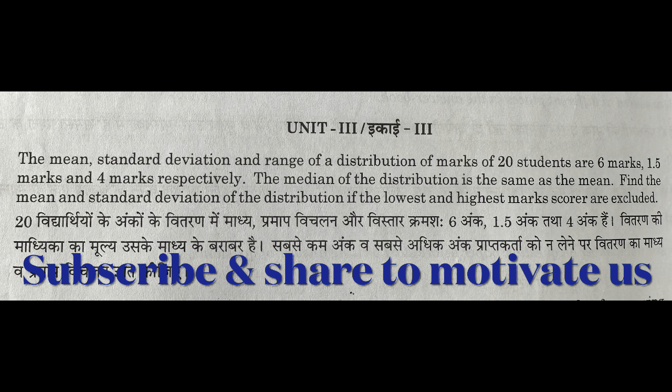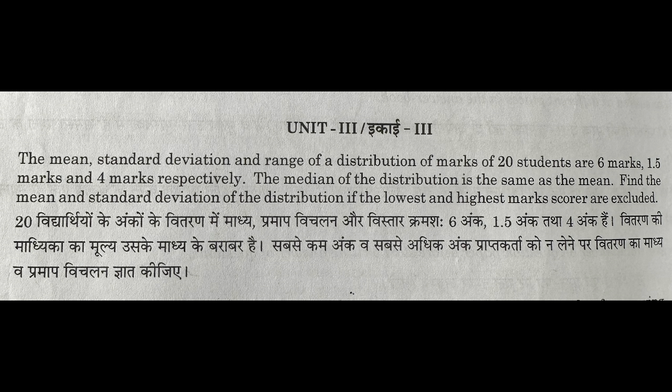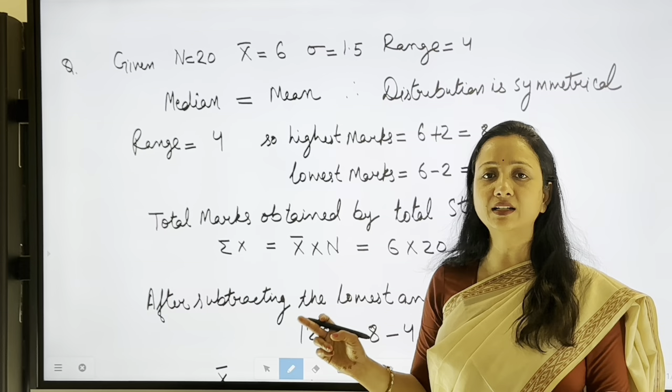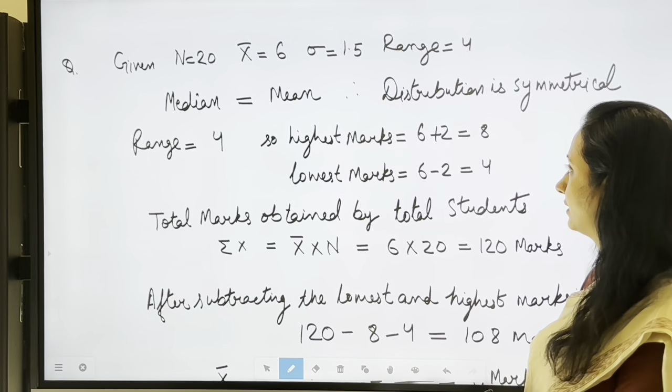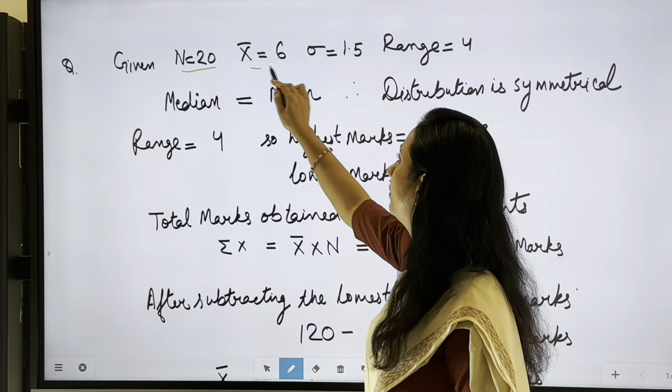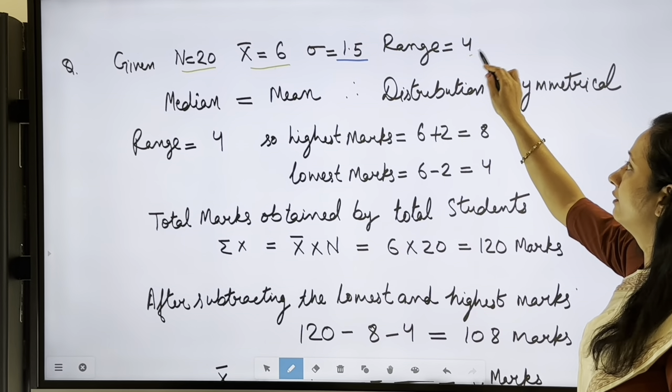Unit 3's first practical question: mean, standard deviation, and range of the distribution of marks of 20 students are 6 marks, 1.5 marks, and 4 marks respectively. The median equals the mean. Find the new mean and standard deviation if the lowest and highest marks scored are excluded. Given: N = 20, x̄ = 6, σ = 1.5, range = 4, and median = mean.